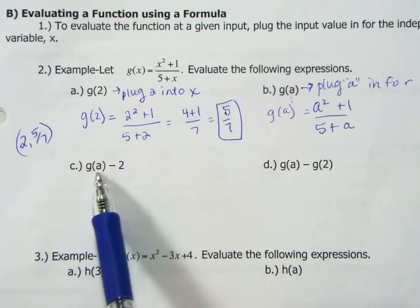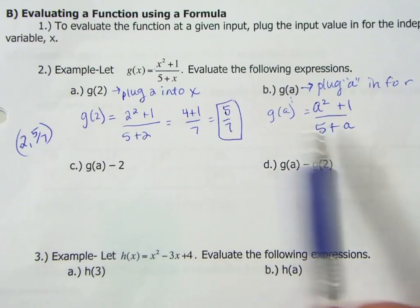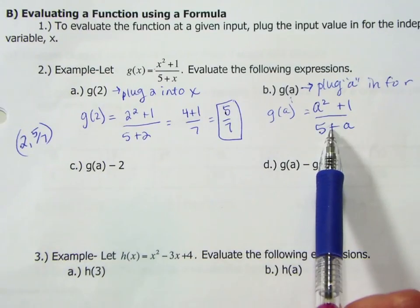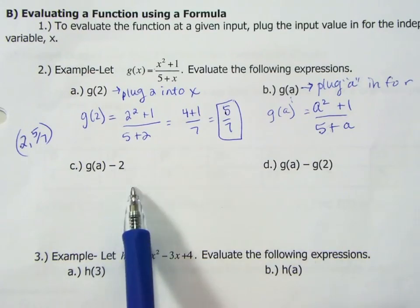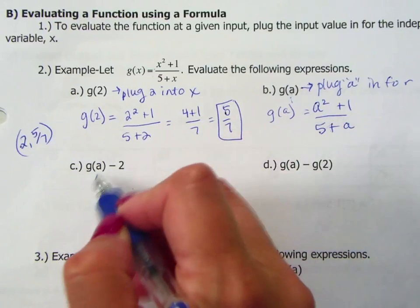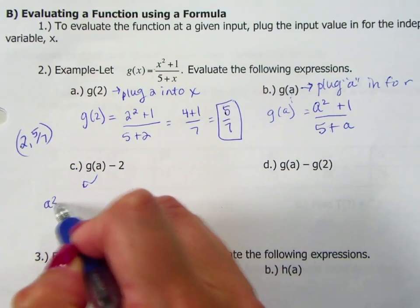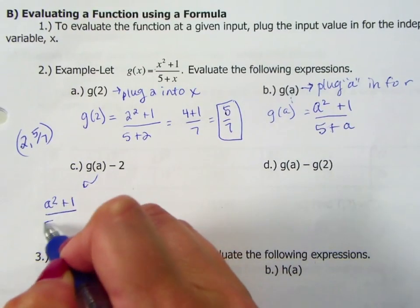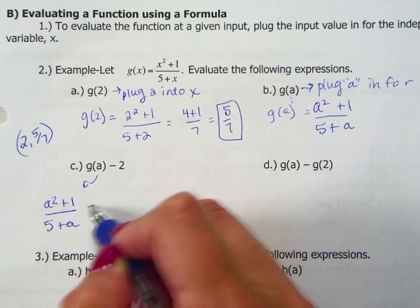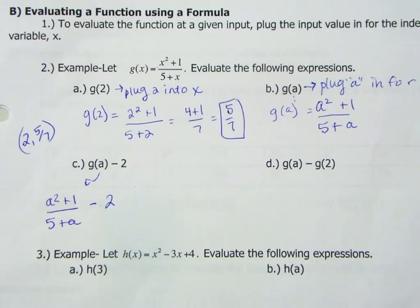If you look at the next example, now we are doing a couple different things. We are finding g(a), which actually we already have done, and then we are subtracting 2. So our g(a), that was the a squared plus 1 over 5 plus a, and then after that we are subtracting 2.